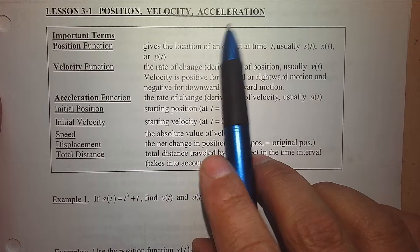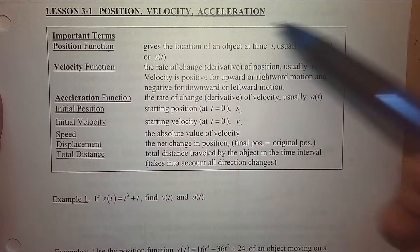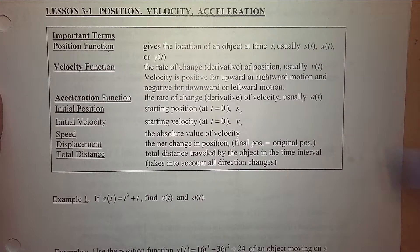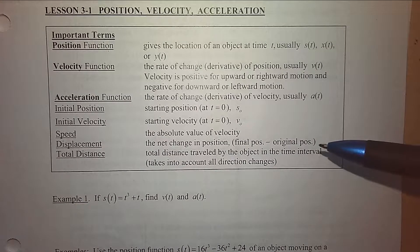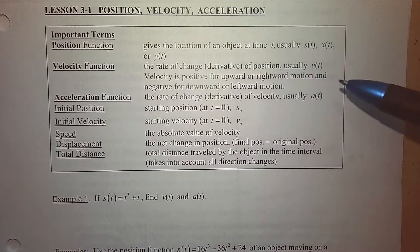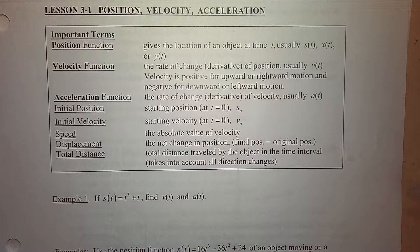Here are some terms to know. The position function gives the location of an object at time t. Usually we use the letter s, maybe x or y, written as s(t), to describe where the object is positioned over time. Velocity is the rate of change of the position, usually written as v(t). Velocity is positive for upward or rightward motion and negative if it's going down or to the left.